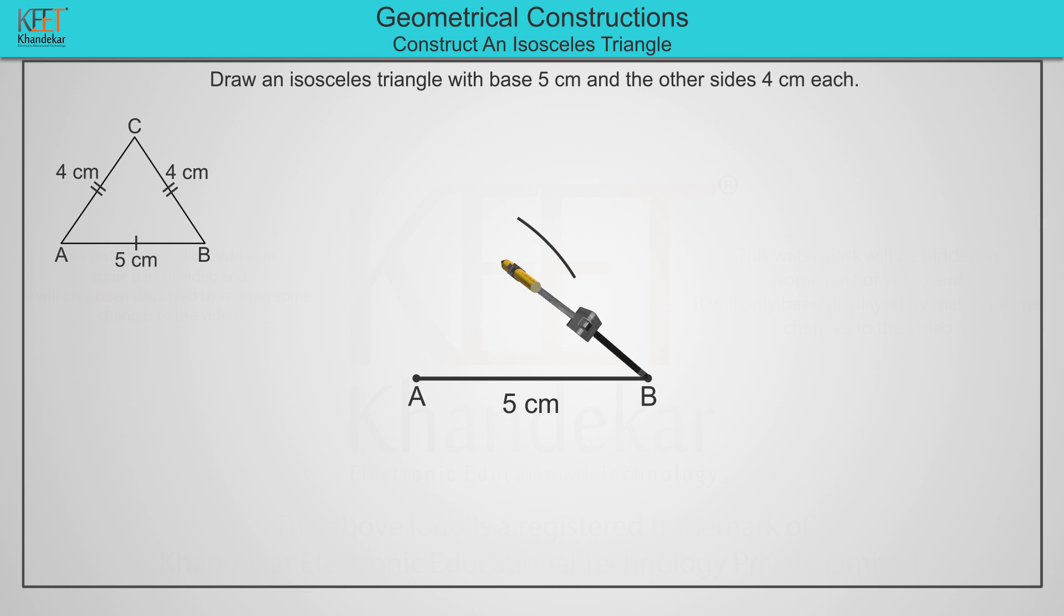From point B, cut the previous arc with the same length of 4 cm. Name the point of intersection of the arcs as C.